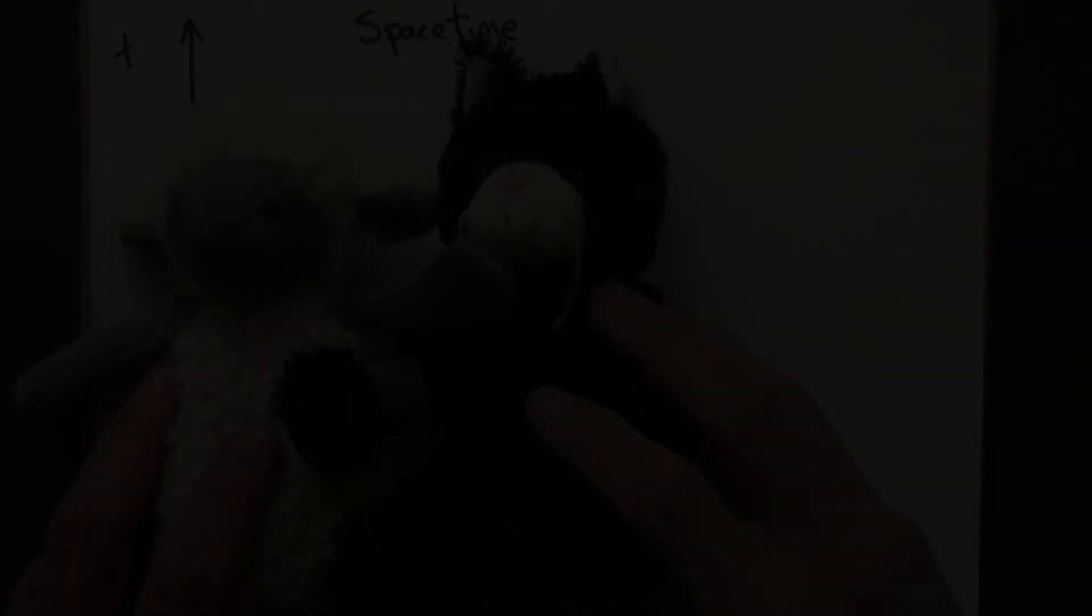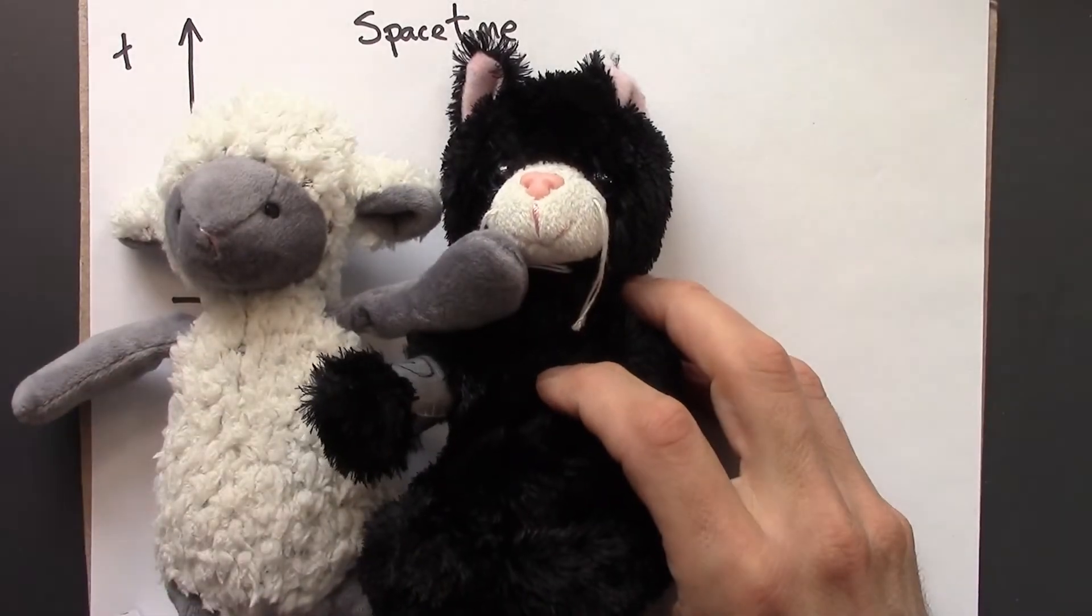You can probably see where this is headed. We're going to take that curved world line, break it up into lots of little world lines that we can pretend are straight, and use a metric equation on them.